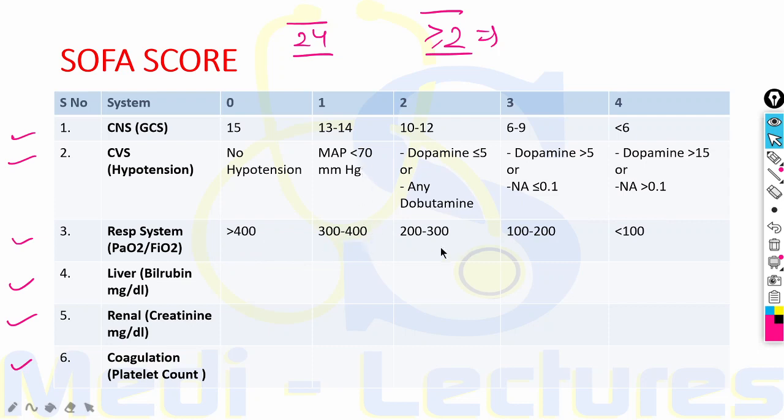In liver, bilirubin in milligrams per deciliter is used: less than 1.2 is score 0, 1.2 to 1.9 is 1, 2 to 5.9 is 2, 6 to 11.9 is 3, and more than or equal to 12 is 4.